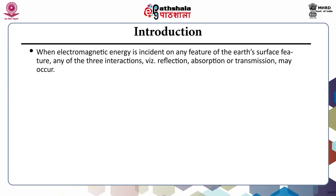When electromagnetic energy is incident on any earth surface feature, any of three interactions — reflection, absorption or transmission — may occur. Electromagnetic energy incident on the surface features is partially reflected, absorbed or transmitted through it. The fractions that are reflected, absorbed or transmitted vary with material type and the condition of the feature. It also varies with the wavelength of the incident energy.